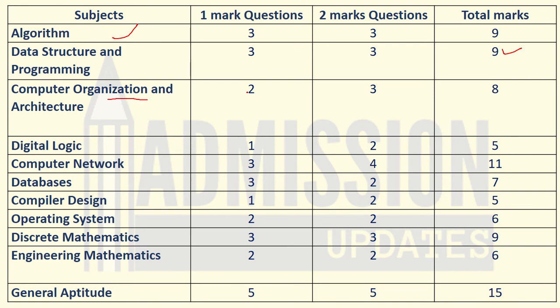Next, questions from Computer Organization and Architecture: two one-mark questions and three two-mark questions, totaling eight marks. For Digital Logic, one one-mark question and two two-mark questions were asked, totaling five marks from this chapter.